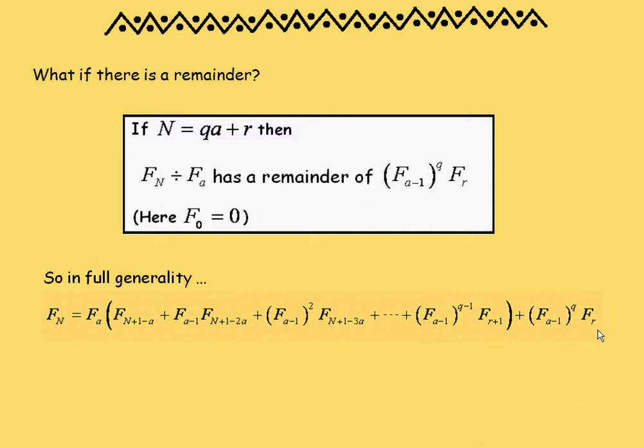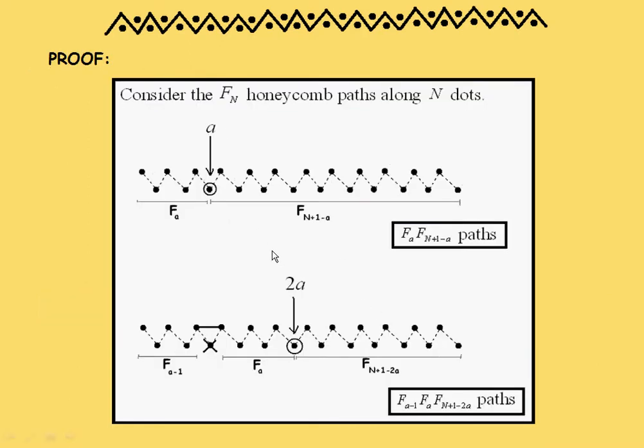So what I'd like to do is prove this via path walking. And this proof is actually surprisingly easy. It's just the mathematical notation is actually harder than the actual proof. Here goes. So let's look at n dots, from dot one to dot n. And we're going to focus on the multiples of a.